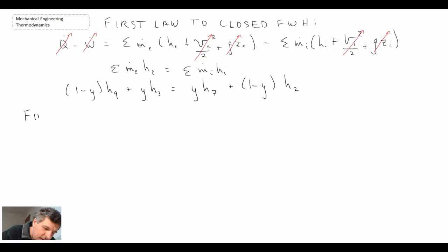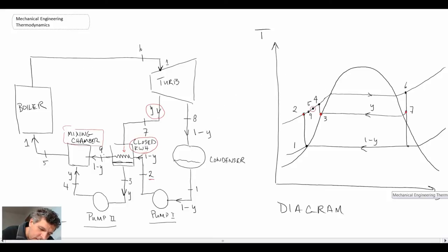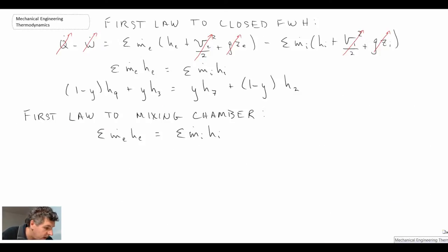So let's look at applying the first law to the mixing chamber. Now our fluid streams that we have, we have fluid stream 9 coming in and 4 coming in and 5 going out. So 2 in and 1 out. And what is exiting is at the full flow rate. So we have 1 for the pre-multiplier.